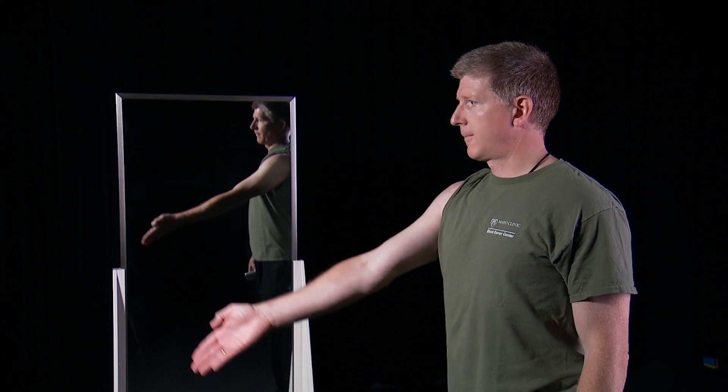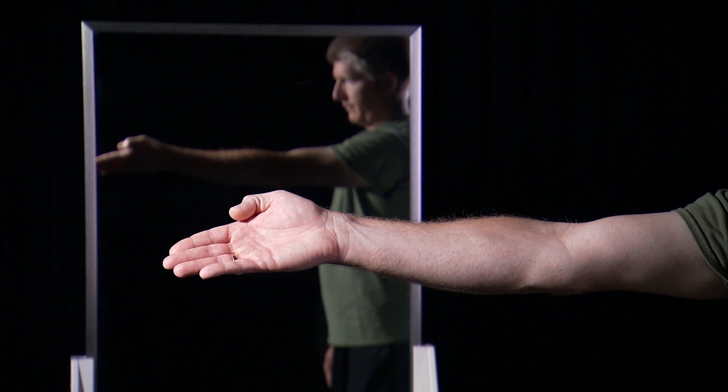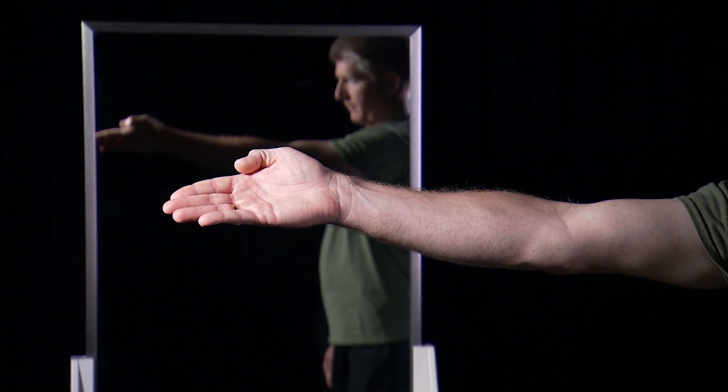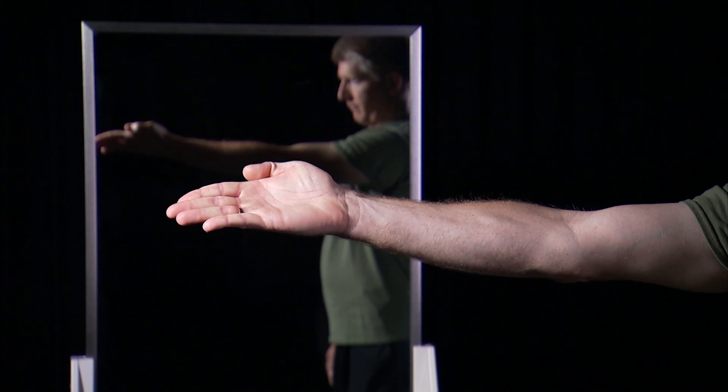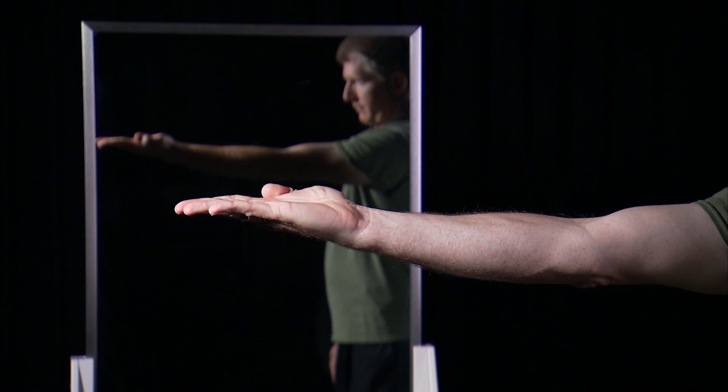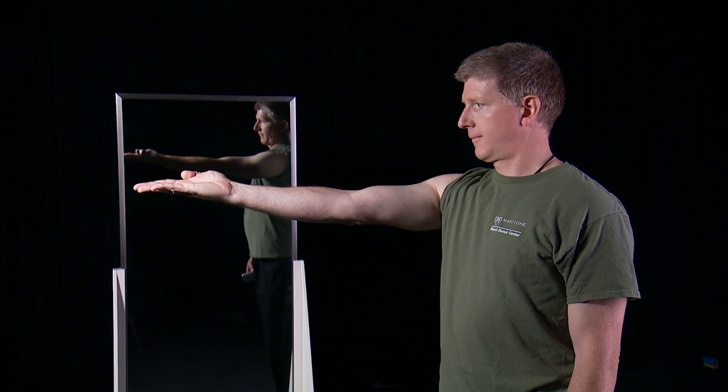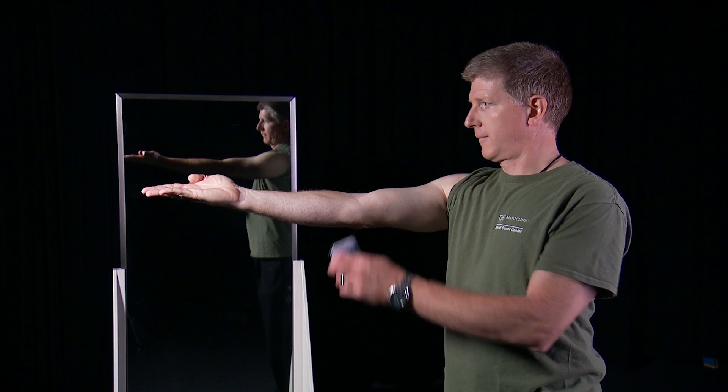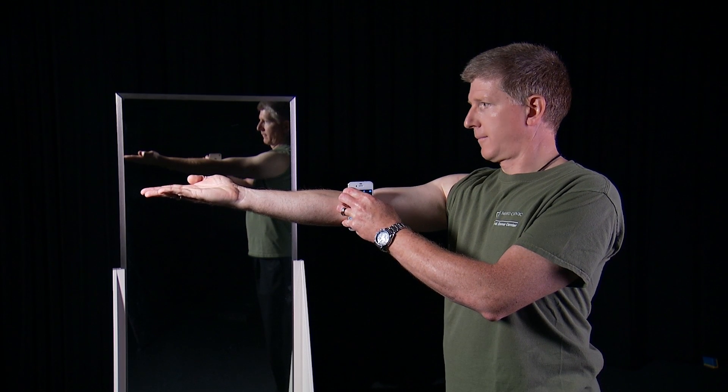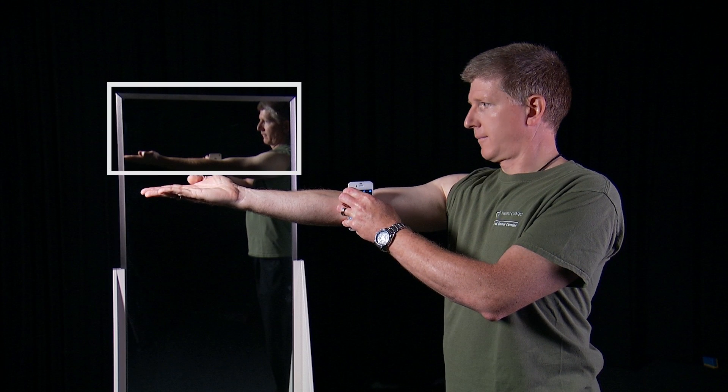Lift your arm so that it is parallel to the floor, keeping it as straight as possible while your palm faces up towards the ceiling. Keep your palm as close to parallel as you can possibly get. Rest your phone on the inside of your elbow and point it at the mirror. Take a picture of your reflection in the mirror while your arm is straight.